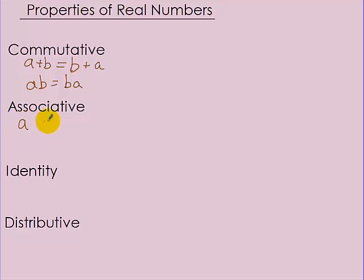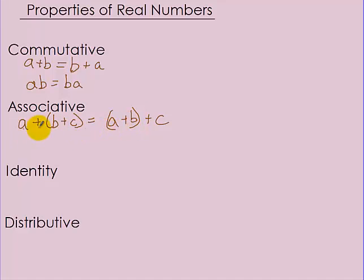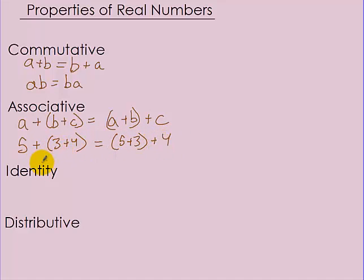The associative property: A plus (B plus C) equals (A plus B) plus C. We're just putting parentheses around different parts because it doesn't matter if you add B plus C first or A plus B first — it all equals the same thing. For example, 5 plus (3 plus 4): adding 3 plus 4 gives 5 plus 7, which equals 12. And (5 plus 3) plus 4 is 8 plus 4, which also equals 12.